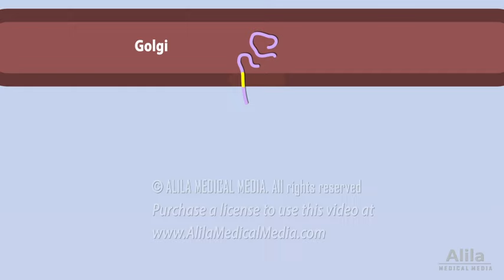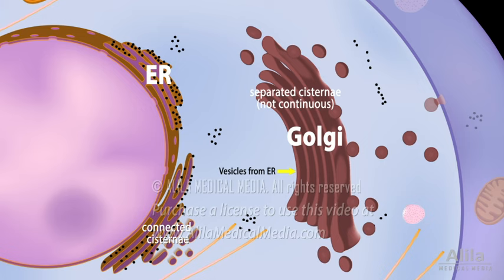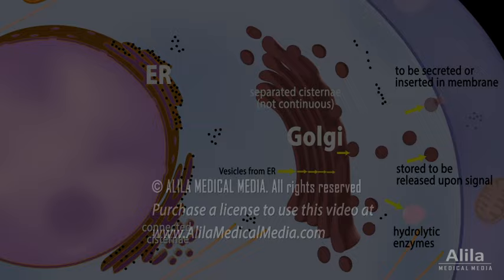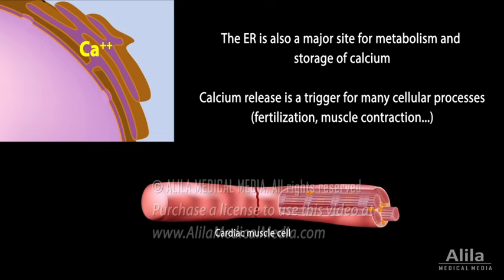The Golgi is a stack of separated cisternae, each containing a set of enzymes responsible for a certain step in protein maturation. Similar vesicles transport lipids and proteins from one cisterna to another, and ultimately to their destinations — the plasma membrane, lysosomes, or storage vesicles. The destination of a protein is typically determined by a signal sequence acting as an address tag within the protein. The ER is also a major site for metabolism and storage of calcium, whose release is a trigger for many cellular processes.